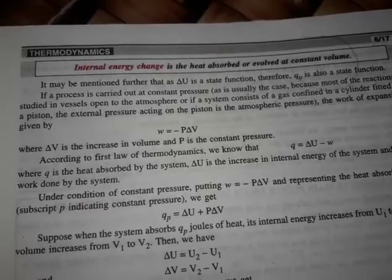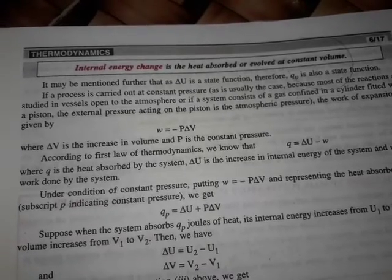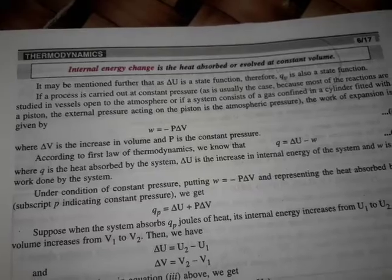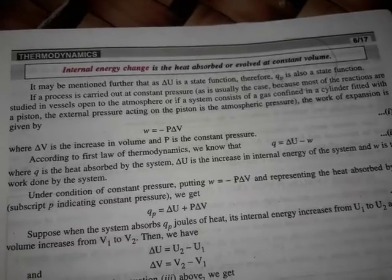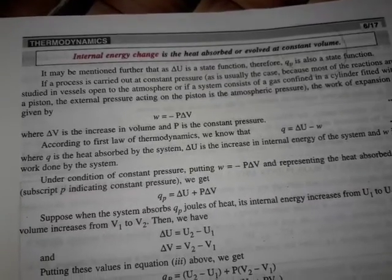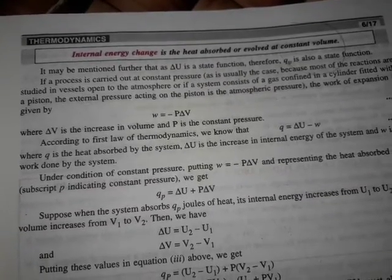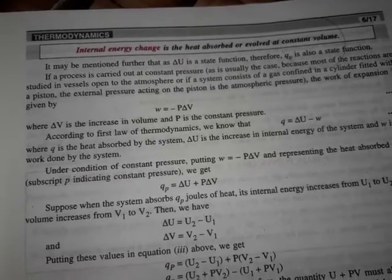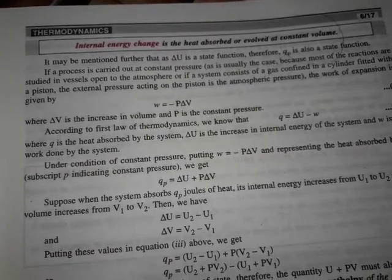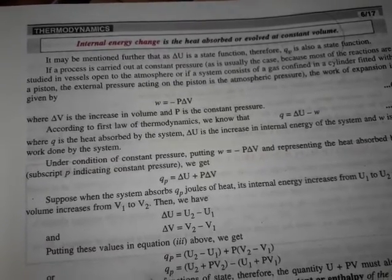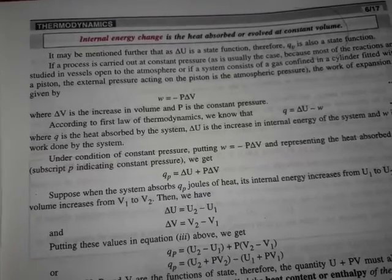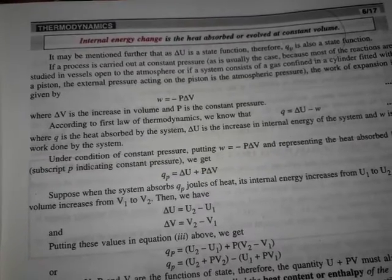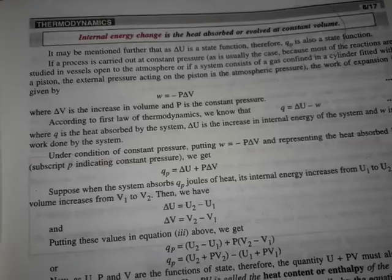If we do a constant pressure process, then w is equal to minus P delta V, where delta V is the change in volume and P is constant pressure. From the first law, q is equal to delta U minus w, and since w equals P delta V, we get qP equals delta U plus P delta V.